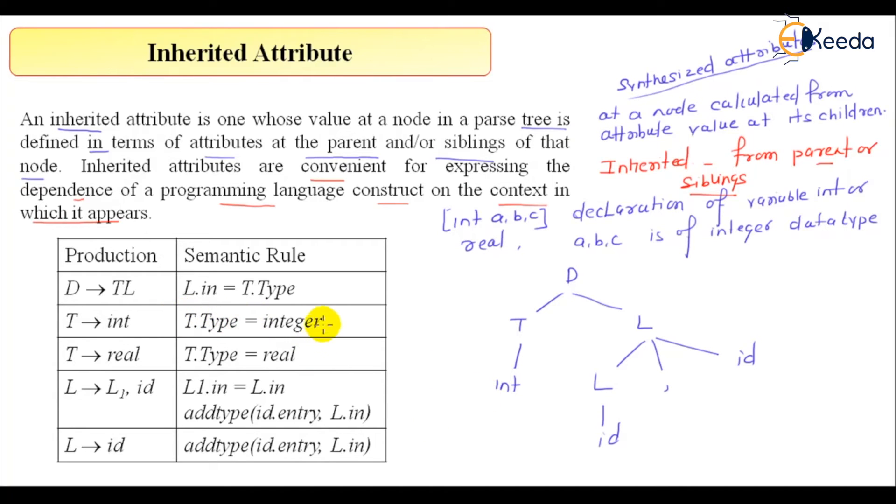Now, if you look at here, T dot type, T dot type is here in this case. I cannot say L dot in is equal to T dot type because what is T dot type, I can't say here. So here the first propagation will be in this direction and from here to here and this will be T dot type. T dot type will be equal to what, this type will become integer. Then this, there is a dependency among this. This value will flow from here to here.